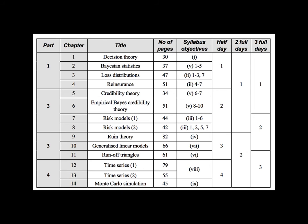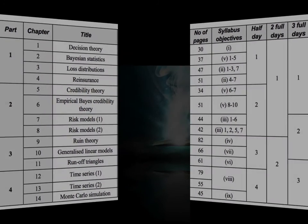If you're studying actuarial science, you'll know that from subject CT6 you'll be learning a whole bunch of stuff around this that you can apply to artificial intelligence. You learn it for insurance, but the same maths can be used in machine learning — decision theory, Bayesian statistics, credibility theory, time series, Monte Carlo simulations — all that stuff is for machine learning as well. And that's basically the aim of this project: take rock, paper, scissors American football, throw in a little bit of actuarial magic, and get artificial intelligence.